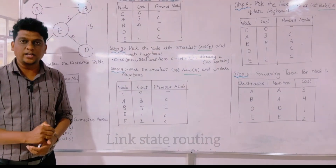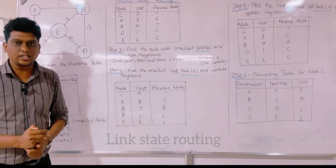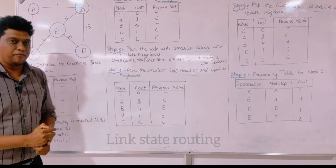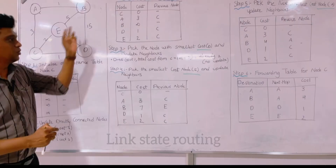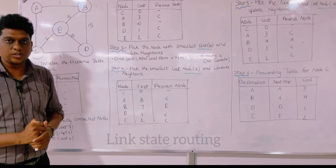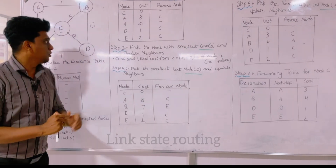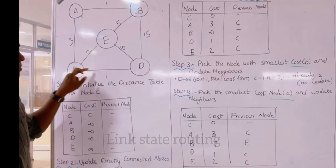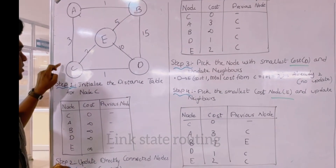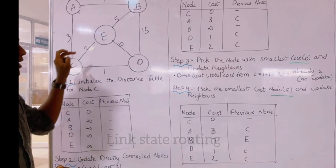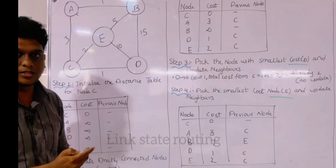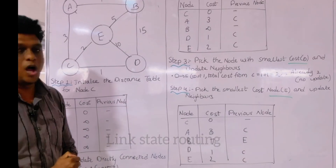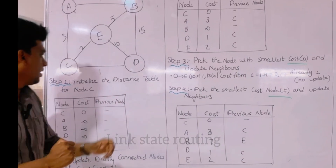Welcome to Vashita. We have to identify the shortest path from one node to all other nodes. So now from node C, we have to identify the shortest path to all nodes.